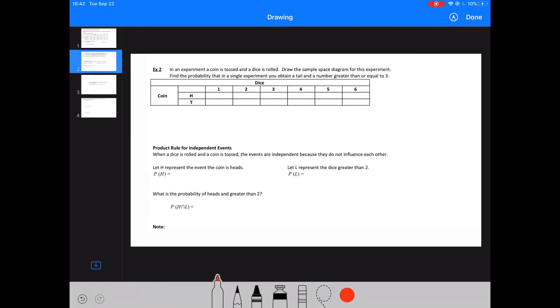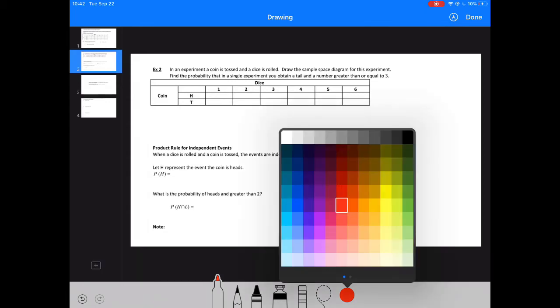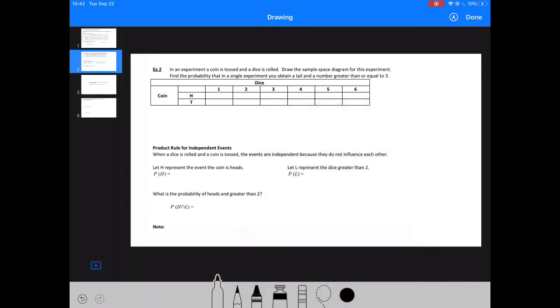Let's look at another example. In an experiment, a coin is tossed and a dice is rolled. Draw the sample space diagram for this experiment. So that's going to be our chart below. So find the probability that in a single experiment, you obtain a tail and a number greater than or equal to 3.